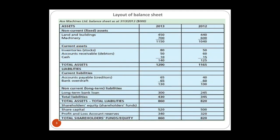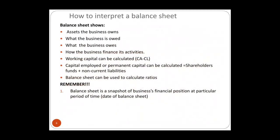From the balance sheet I can also calculate working capital — it's current assets minus current liabilities. As shown here, that's 140 minus 130. I can also calculate capital employed. Don't confuse shareholder funds with capital employed. Shareholder funds are the permanent capital invested by the owners — share capital plus retained profit. Capital employed is shareholder funds plus any long-term loan or non-current liability. Here, that's 860 plus 300, so capital employed equals 1,160.